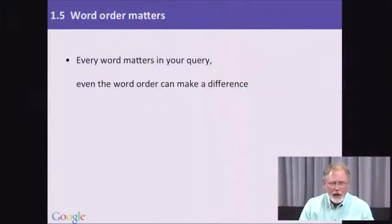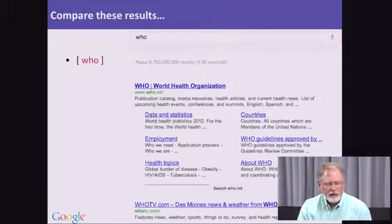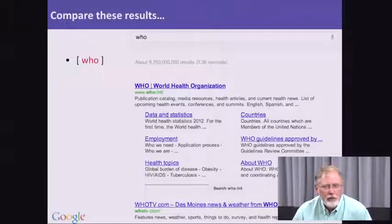When we put together a query, one of the things we have to think about is not only what words we use, but also what order we put those words in the query. So if you're making your query, say, three, four, five words, do you just put them in any old order you can think of, or do you want to actually sort of preserve word phrases and so on? That's what we're going to talk about now. Every word in your query matters. Even the word order can make a difference. So let's compare a few results.